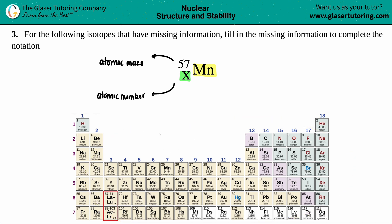Some of you might know what Mn is, but if you don't, you could always go on the periodic table and find where it is. Mn is right here on the periodic table. Mn is manganese, and the atomic number that manganese has that nobody else has is number 25, and 25 is lower than 57. Keep in mind, big numbers on the top, smaller numbers on the bottom.